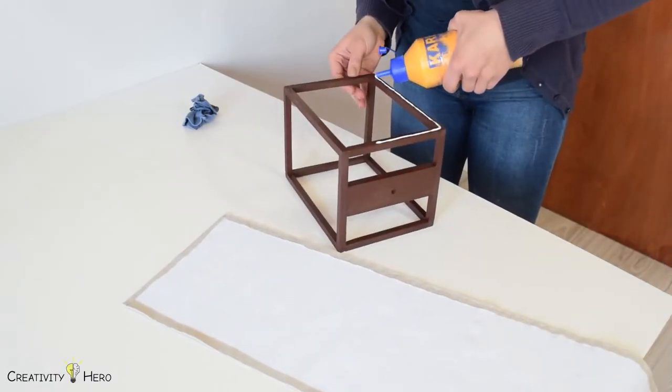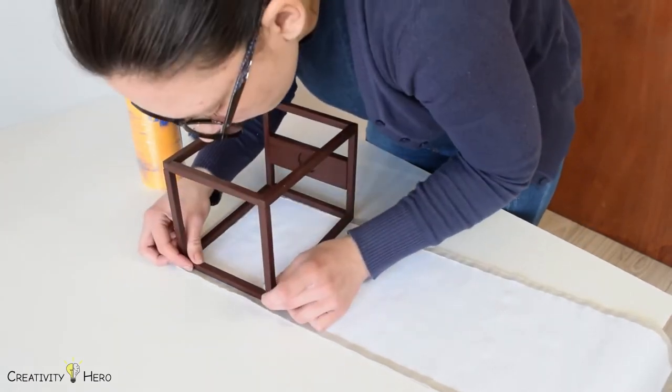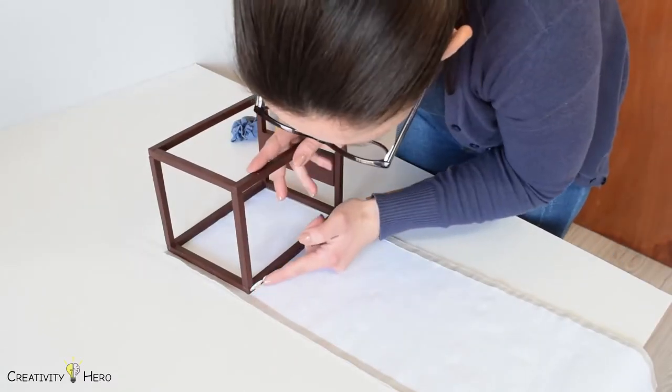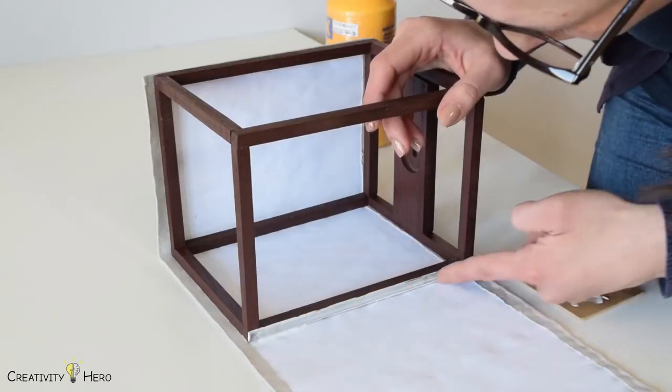I glued up the lampshade to the frame. It is very important to do this carefully one side at a time because you need to align the edges of the frame with the edges of the shade.